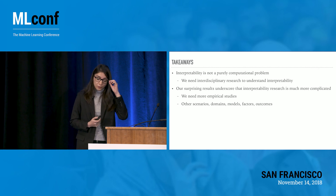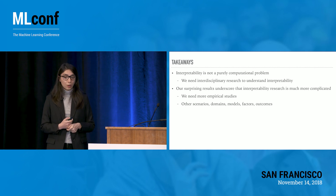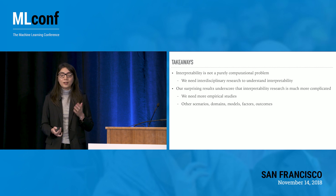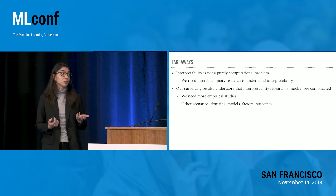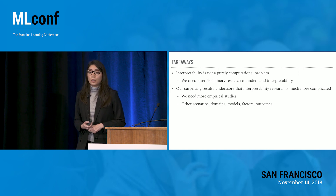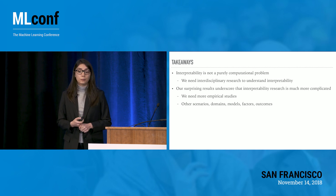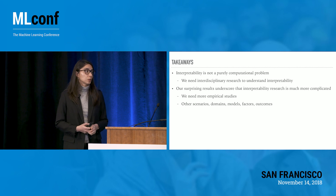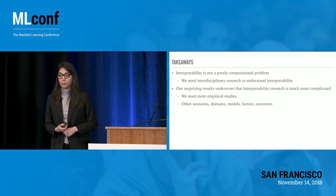I want to finish by emphasizing that interpretability is not a purely computational and technical problem. As hard as it might seem for computer scientists to think about it that way, we are dealing with humans, and we need to learn from research in sociology, psychology, and decision-making. We need to apply interdisciplinary approaches to better understand interpretability, and the surprising results I talked about show that the big picture of interpretability is much more complicated than usually thought in the community.